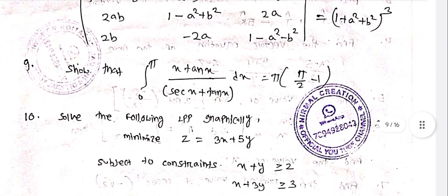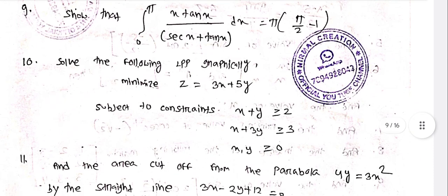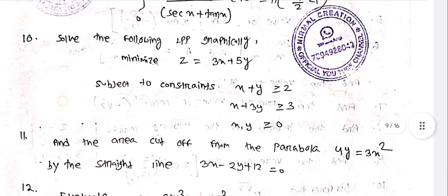Evaluate the integral from 0 to π of (x tan x)/(sec x + tan x) dx = π(π/2 - 1).